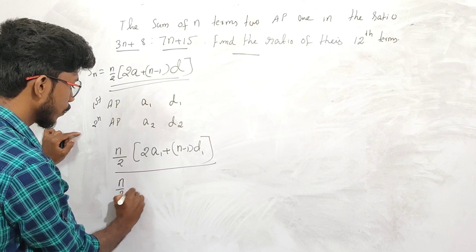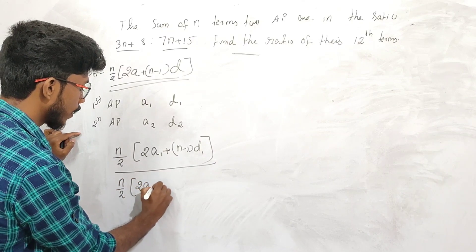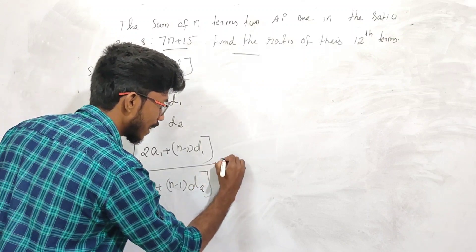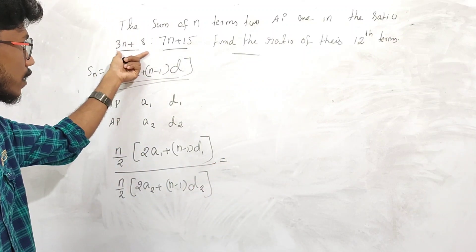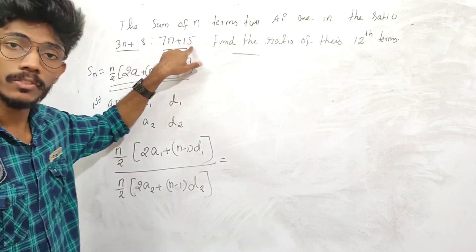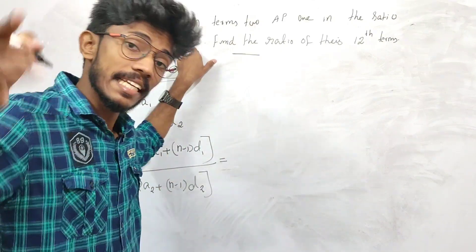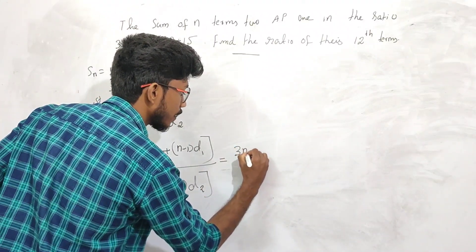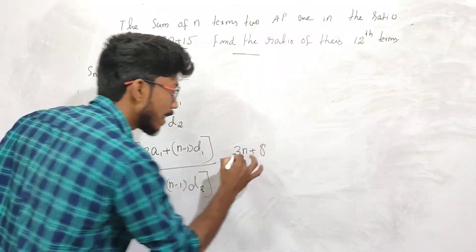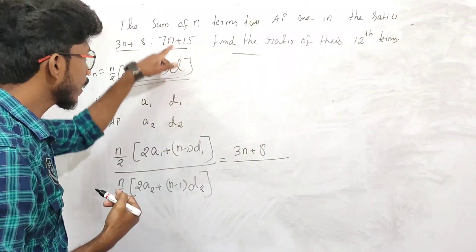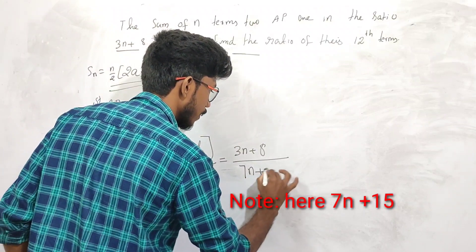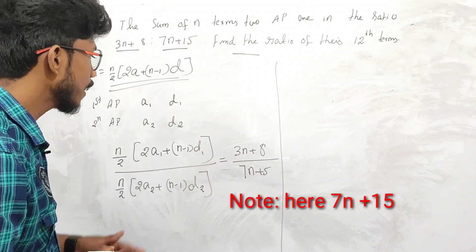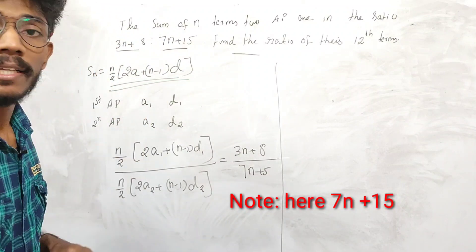The sum of n terms is n by 2 into 2a1 plus n minus 1 into d1, divided by n by 2 into 2a2 plus n minus 1 into d2, which is equal to the given ratio 3n plus 8 divided by 7n plus 5.